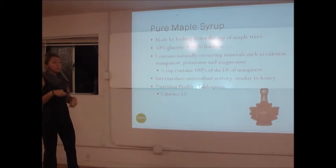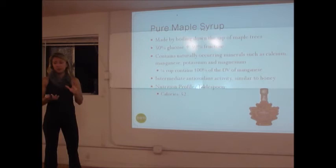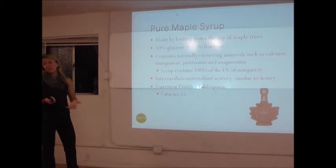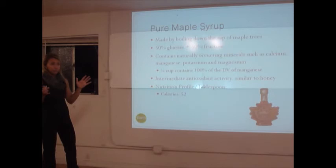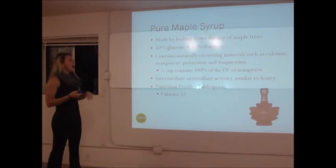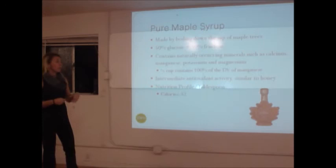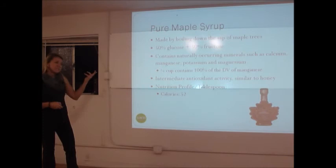Maple syrup is probably a powerhouse of nutritional benefit for a real sweetener. It's a very natural process — you just boil down the sap from trees, no 40 steps involved. It's a 50-50 mixture of glucose and fructose and has a lot of natural minerals and nutrients. We're talking about pure maple syrup, not the heavily processed kind with corn syrup. It gives you 100% of your daily manganese — needed for metabolizing cholesterol and nutrient breakdown — something you get nothing of from table sugar or artificial sweeteners.